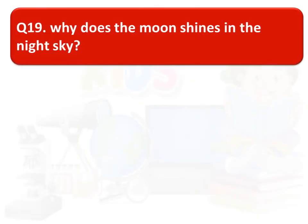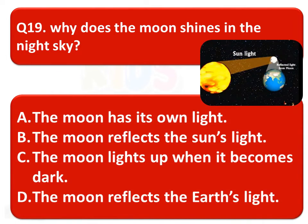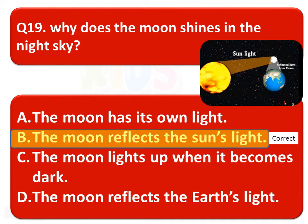The next question is: why does the moon shine in the night sky? Option A: the moon has its own light. Option B: the moon reflects the sun's light. Option C: the moon lights up when it becomes dark. Option D: the moon reflects the earth's light. The correct answer is Option B — the moon reflects the sun's light.